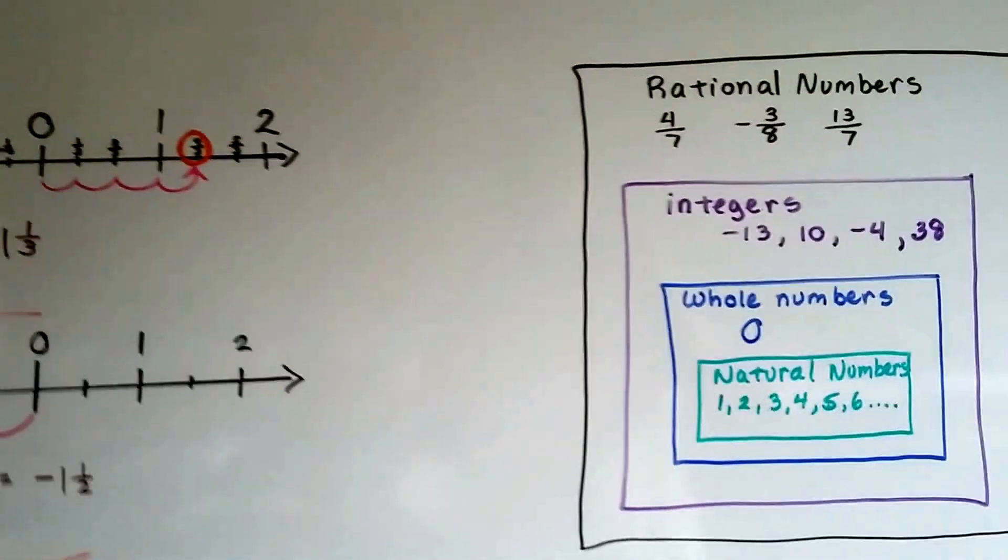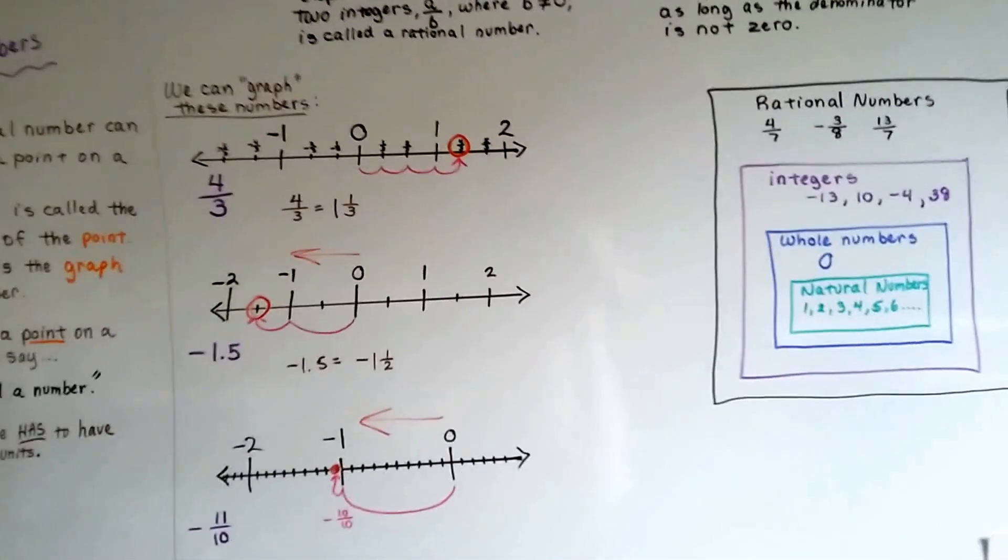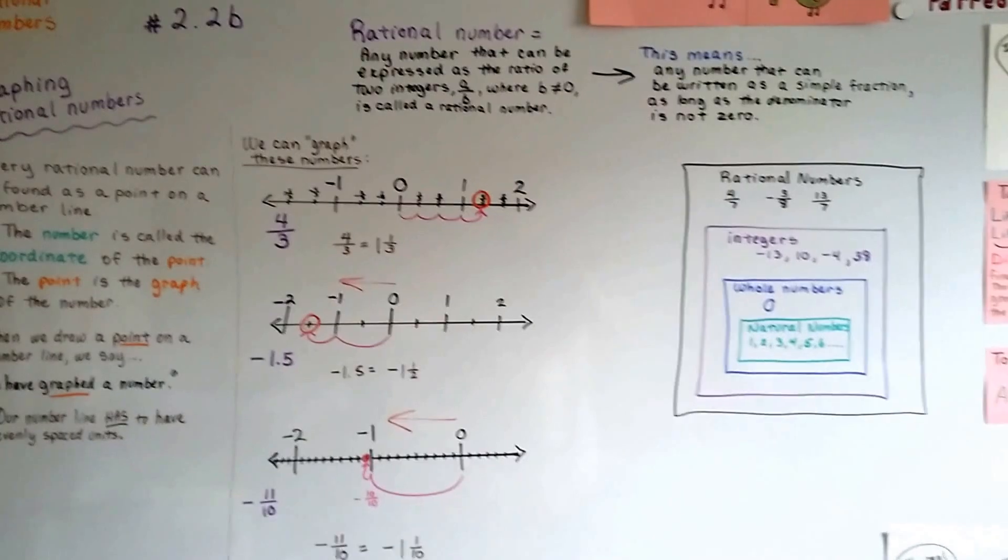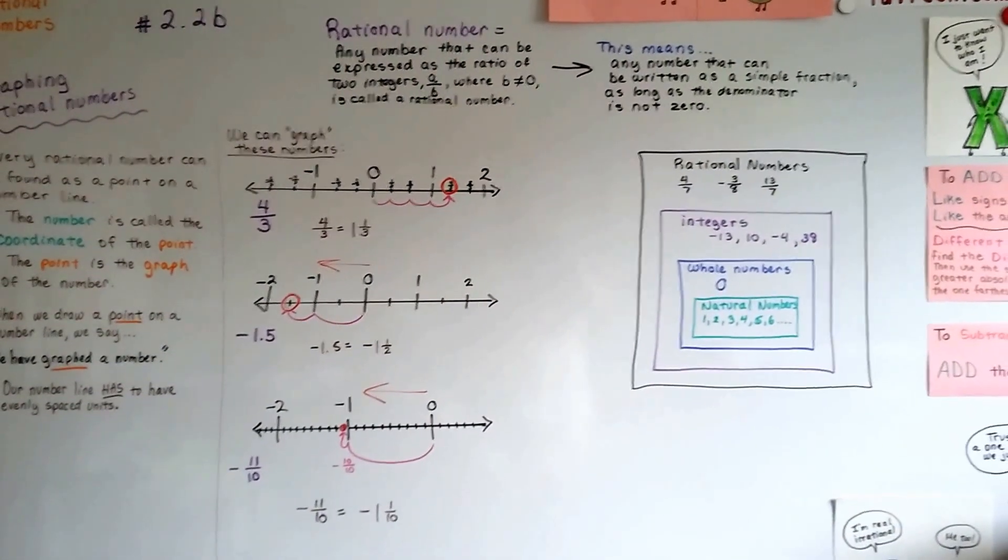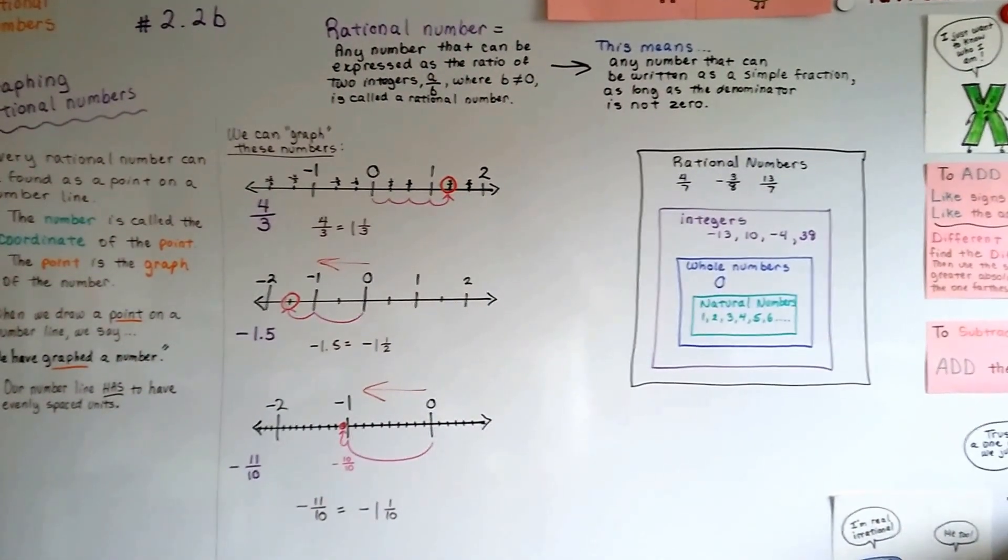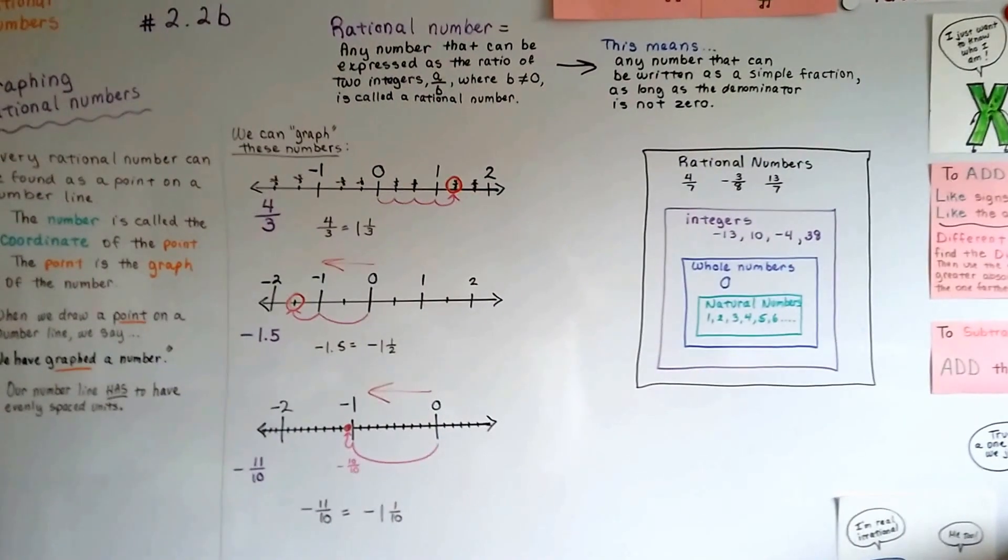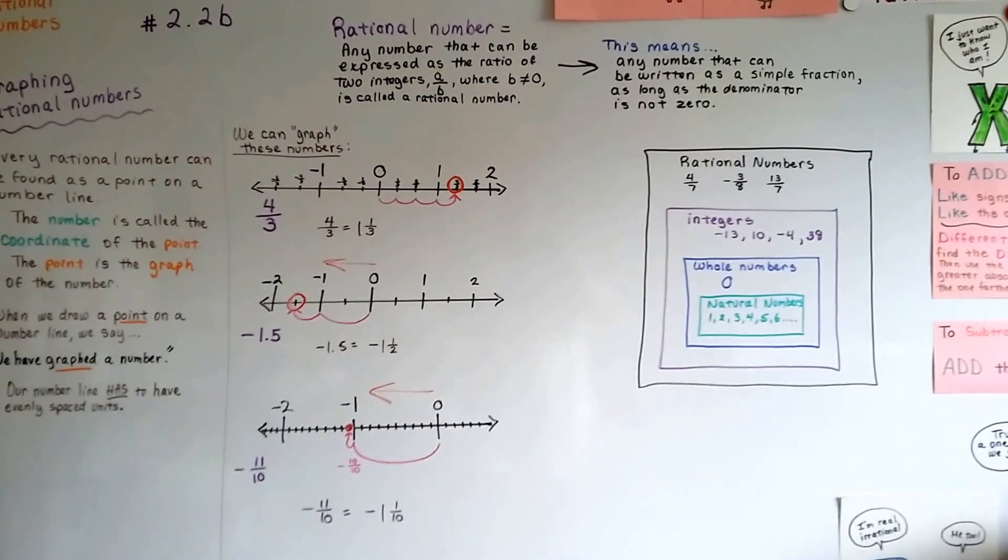We're going to continue on and talk about putting rational numbers in order by size with inequality signs, with the less than, greater than signs. I'll see you at 2.2c. Bye!